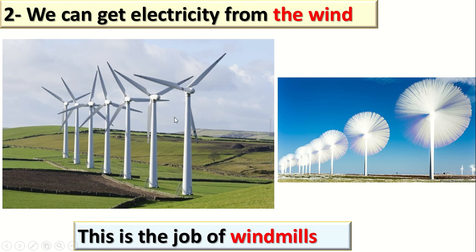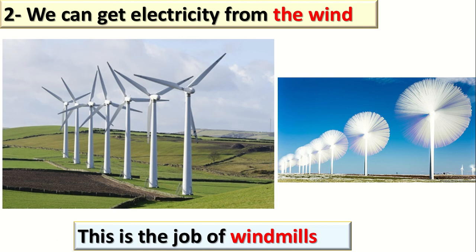How does it work? When there is wind in the air, it makes the windmills move. When the windmills move, they get energy, and that energy is stored as electricity. So we can get electricity from the wind by using the windmills.